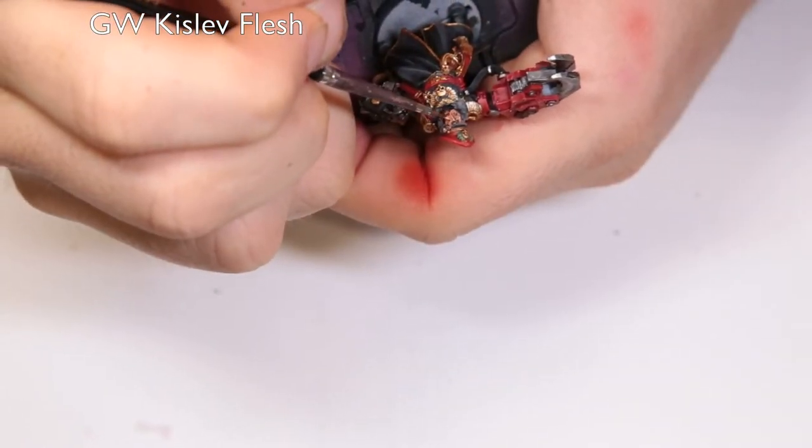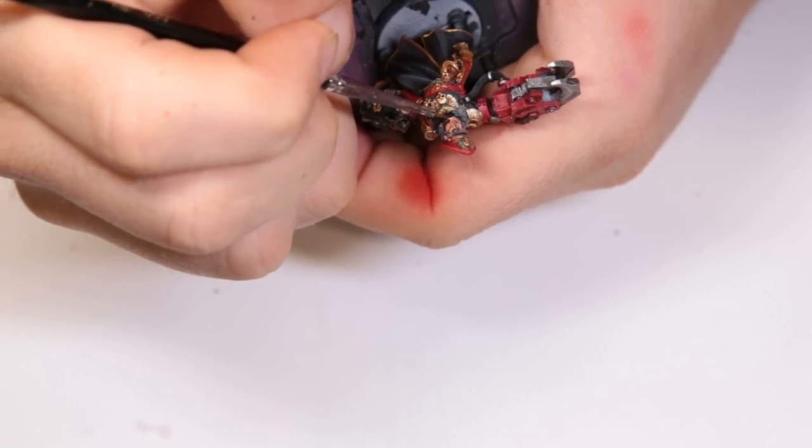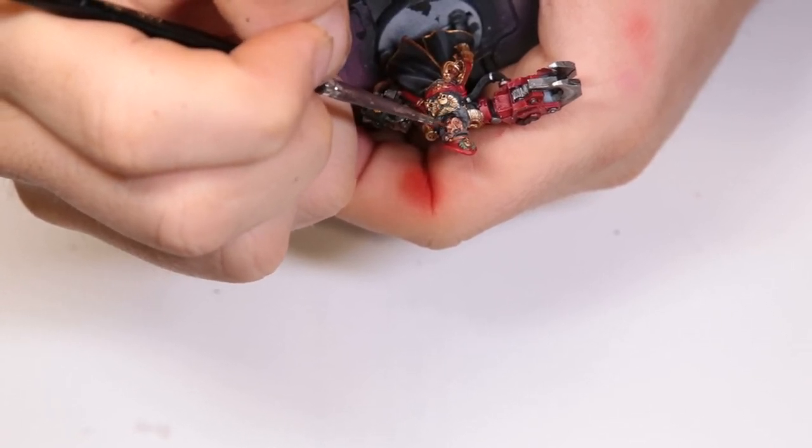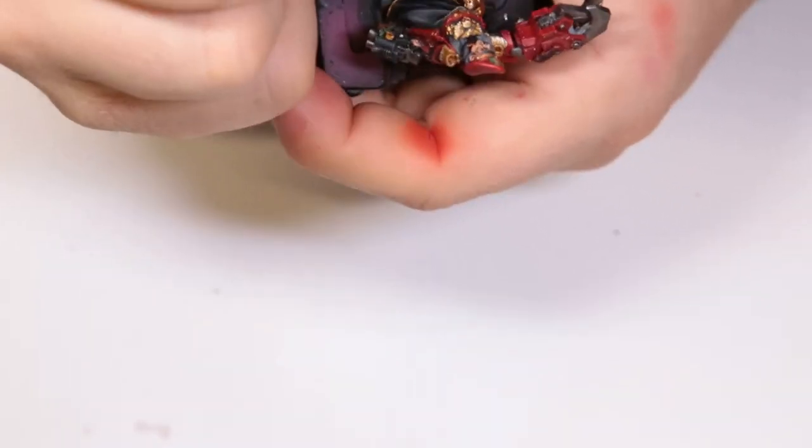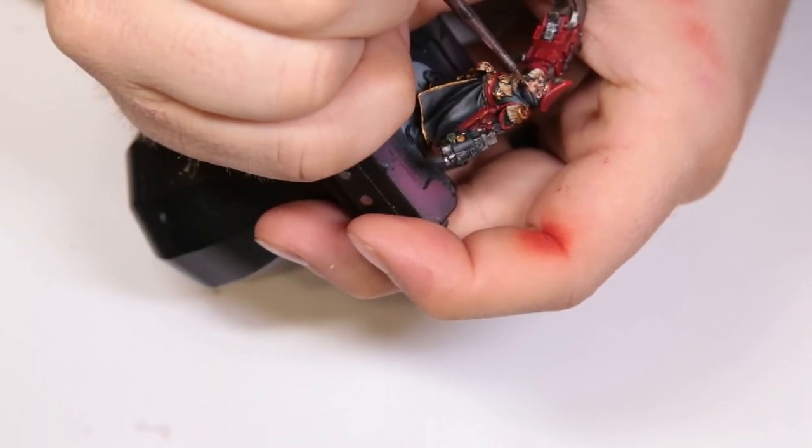Coming through with Kislev Flesh. He's got a really well sculpted face, so it lends itself very well to laying in good highlights throughout the face. Just go through and pick the highest points out where the Cadian was a while ago. And then work it up from there.